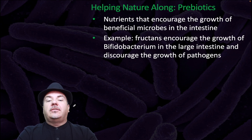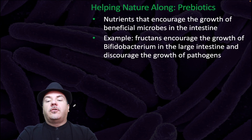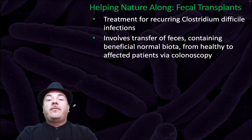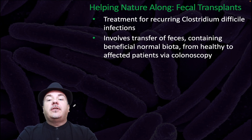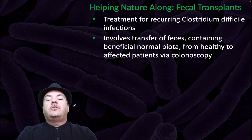Another method is prebiotics, which are nutrients that encourage the growth of beneficial microbes in the intestine. For example, fructans encourage the growth of Bifidobacterium in the large intestine and discourage the growth of pathogens. An example of a prebiotic would be fiber. Another way of helping nature along is through fecal transplants, a treatment for recurring Clostridium infections. It involves the transfer of feces containing beneficial normal biota from a healthy person to an infected patient by colonoscopy.